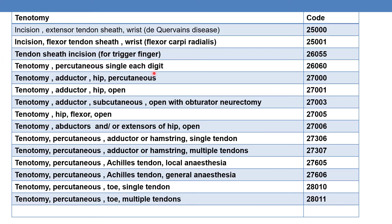For tenotomy, percutaneous, single, each digit, report 26060. For tenotomy of the hip adductor, percutaneous, report 27000. For tenotomy of the hip adductor, subcutaneous open with obturator neurectomy, report 27003. For tenotomy of the hip flexor, open, report 27005; and for tenotomy of the hip abductors and/or extensors, open, report 27006.